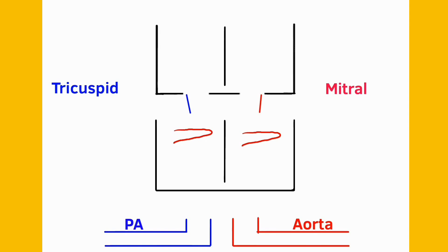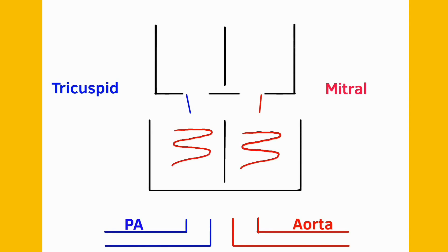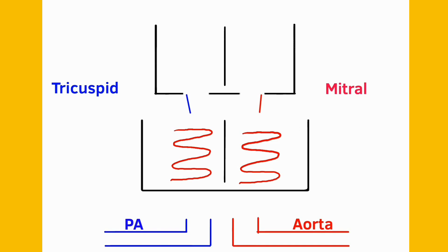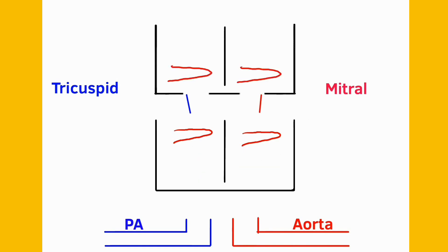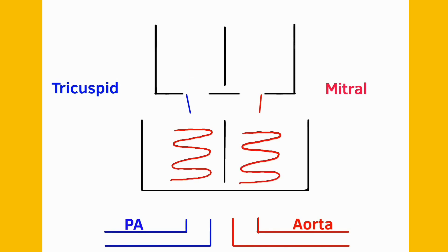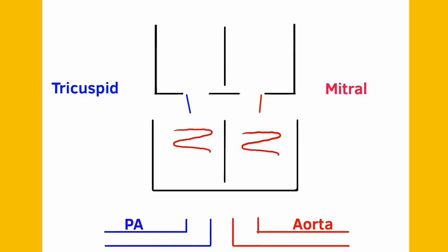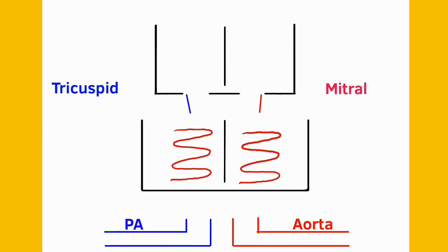Blood starts flowing into the ventricles as soon as the tricuspid and mitral valves open. This initial phase of ventricular filling is called rapid filling, and it's a passive process because the atria have not yet contracted to provide the atrial kick. The blood pushed into the ventricles after the atrial kick is referred to as reduced filling. The incoming blood stretches out the ventricles, and as soon as the ventricles are filled up to capacity, the tricuspid and mitral valves close.